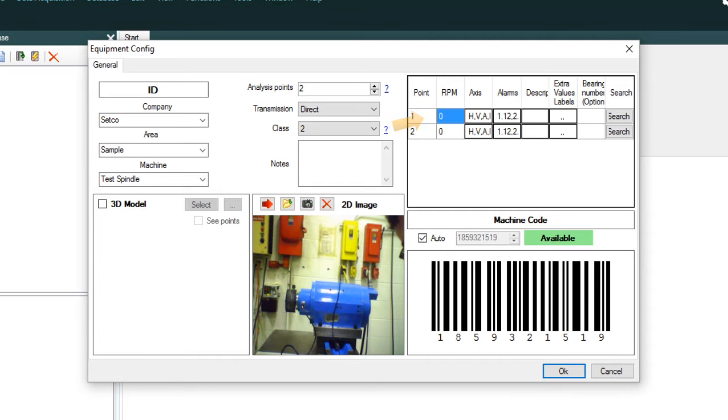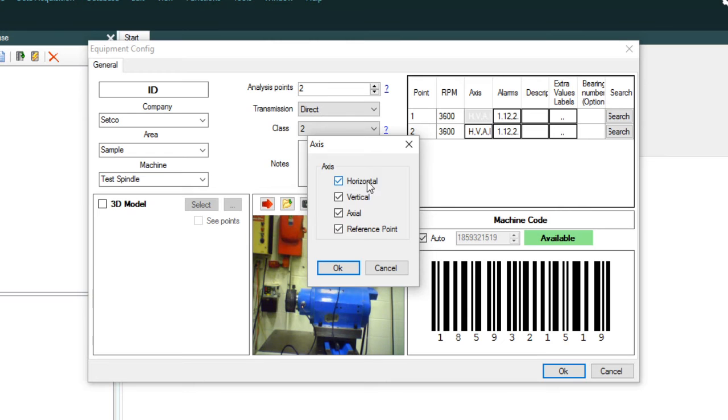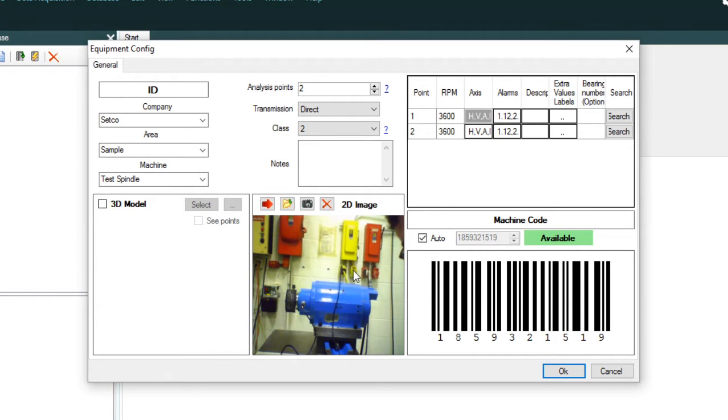Enter the typical operating RPM for the equipment. For a complete assessment, leave all of the axes boxes checked. Otherwise, choose the desired measurement axes.